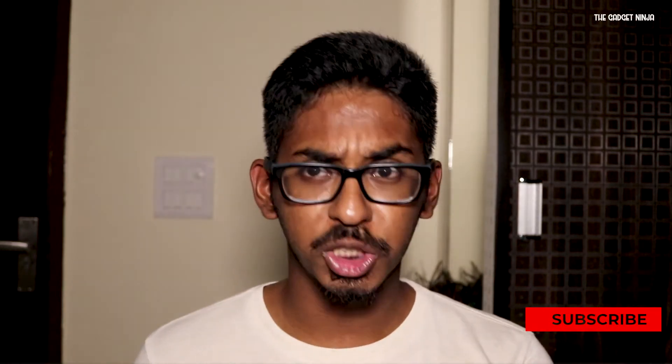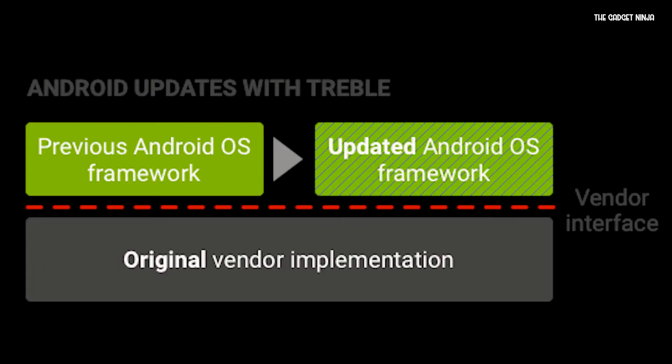Now with Project Treble, it's still divided into parts, but both parts are independent of each other. So if Google pushes out an update, it just has to update the OS framework, and the vendor implementation can stay as it is. So it will work on all the vendor implementations.